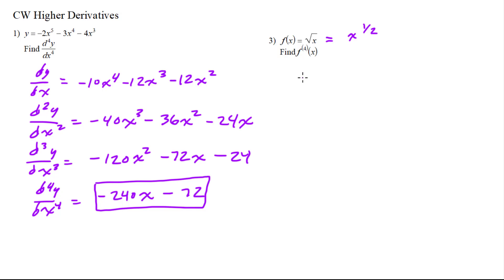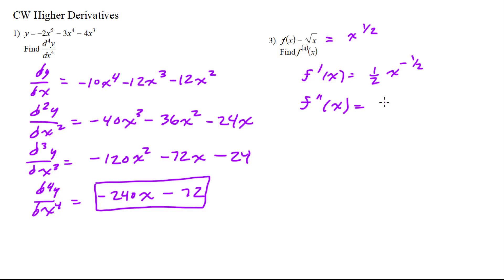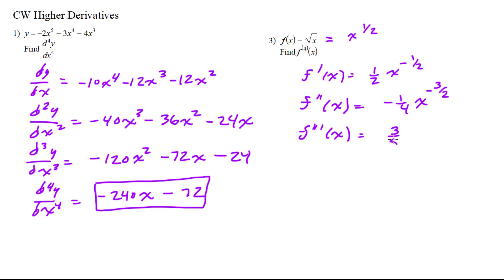So the first derivative f prime: now that we've written it as x to the one-half, the one-half goes out in front and we have one-half x to the negative one-half. The second derivative would be negative one-fourth x to the negative three-halves. The third derivative is going to be positive three over eight x to the negative five-halves.